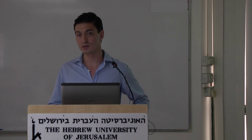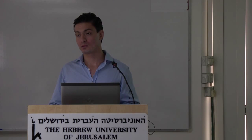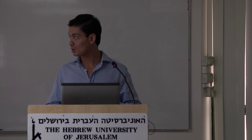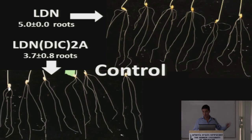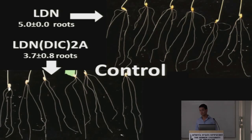Gabriel responded that the pictures were taken after only seven days and didn't reach the stage of crown root development mentioned. Another planned experiment is to test how long this delay in root development actually is — that's another factor to consider. Thank you, Gabriel.